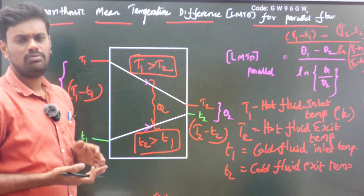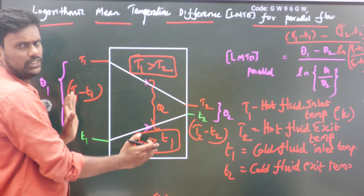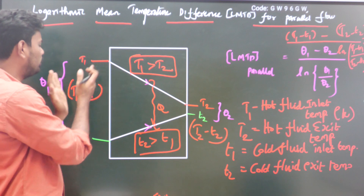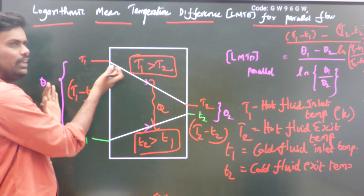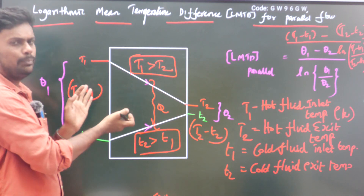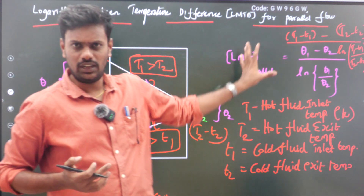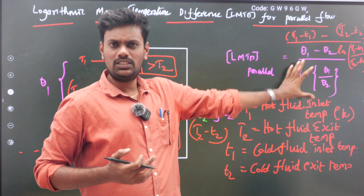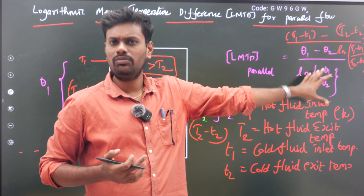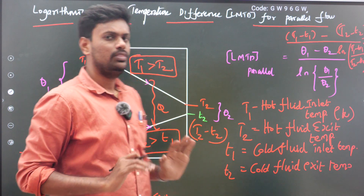This diagram is for parallel flow. I clearly explained how theta 1 and theta 2 are determined. If you understand this then you don't need to memorize the formula. Just remember: theta 1 minus theta 2 divided by ln of theta 1 by theta 2.